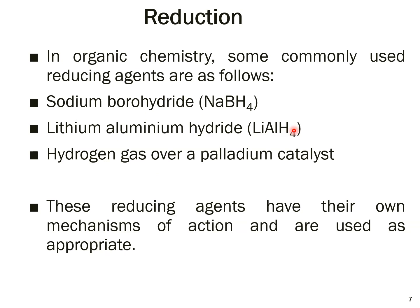We have some very common reducing agents in organic chemistry. The first one is sodium borohydride, NaBH4. The second is lithium aluminum hydride, LiAlH4. We can also use hydrogen gas over a metal catalyst — usually platinum. All these different reducing agents have their own mechanisms of action and are used where appropriate. We have to decide which reducing agent to use depending on the reaction conditions, the structure of the reactant, and the nature of the groups present.